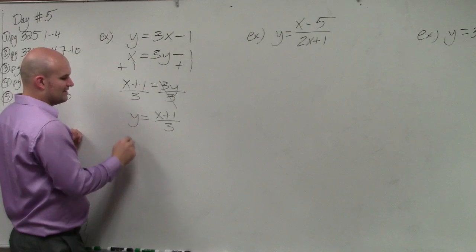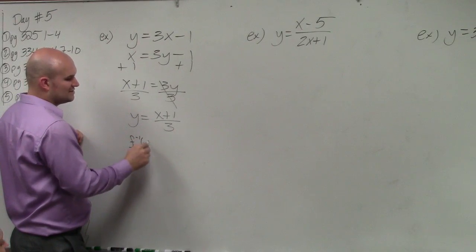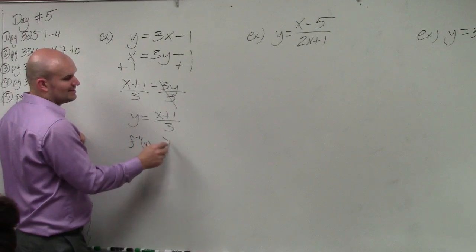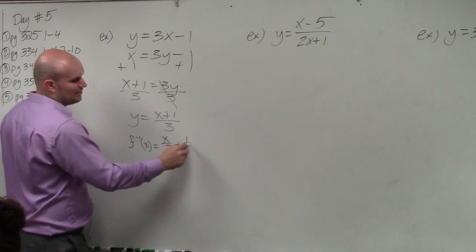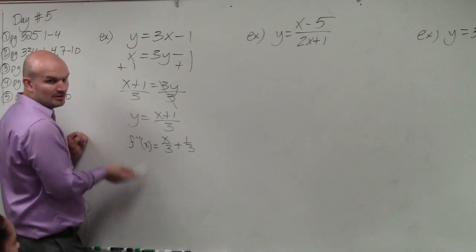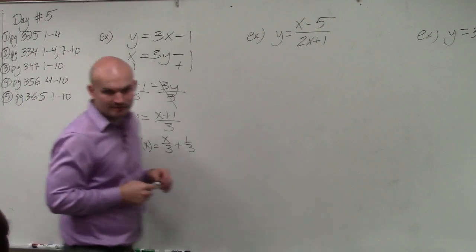When we're talking about writing the function, we can just replace the y with the f inverse. You could leave it as x plus 1 over 3. It also might be, you might see it written as x over 3 plus 1 third. Basically, using the distributive property, we distribute the 3 into both of those terms. But those are two different ways we could write the inverse.